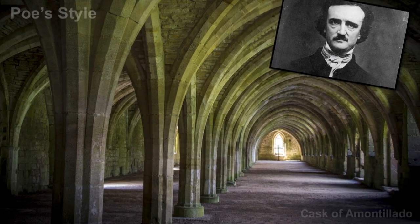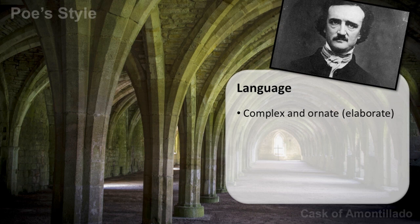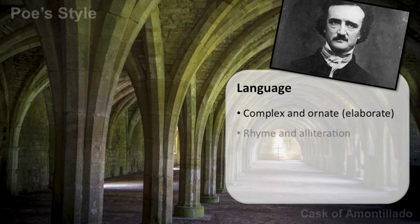Let's start by looking at Poe's style and his language. Poe is known to use complex and ornate language — it means elaborate language. He loved words and writes in a romantic fashion with complex vocabulary. He's not only complex in vocabulary, he's also very poetic. If you look at it closely, you will see that he uses lots of rhyme and alliteration.